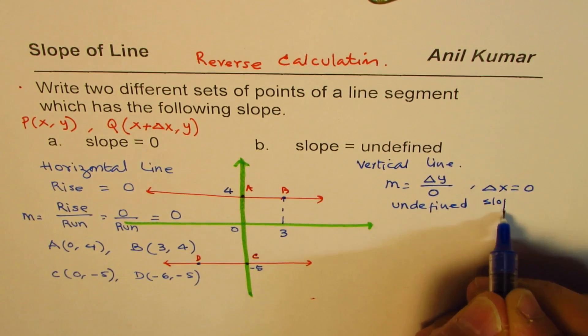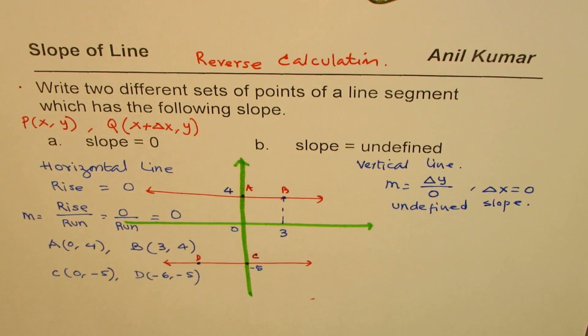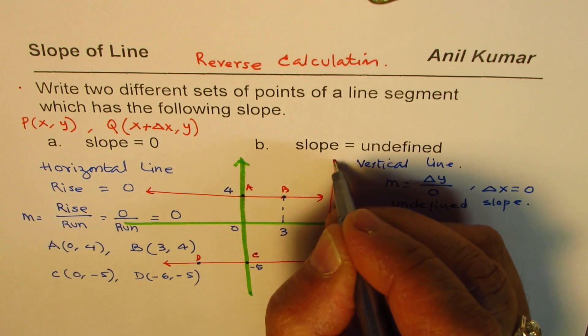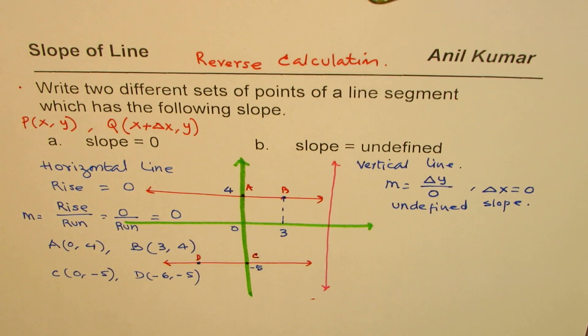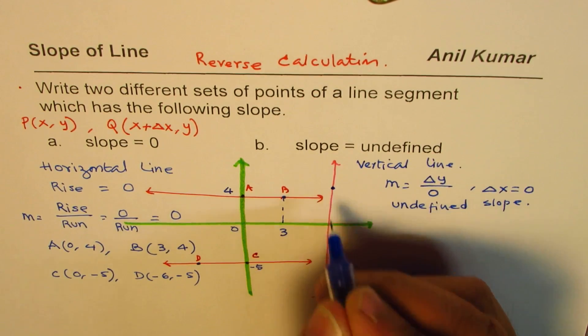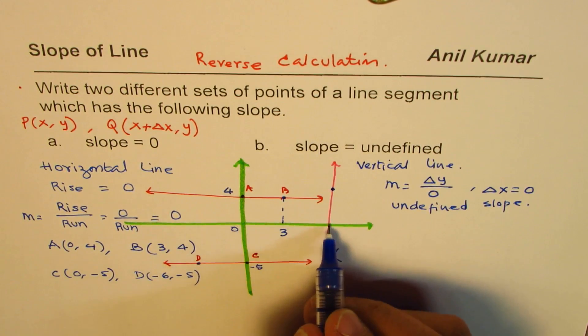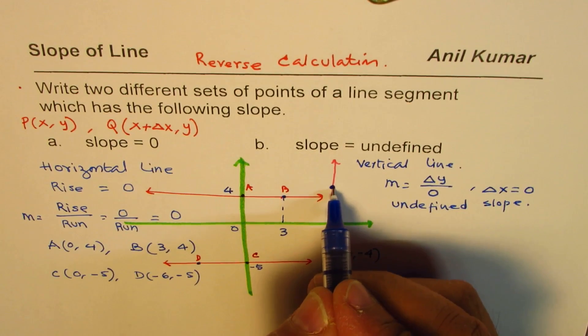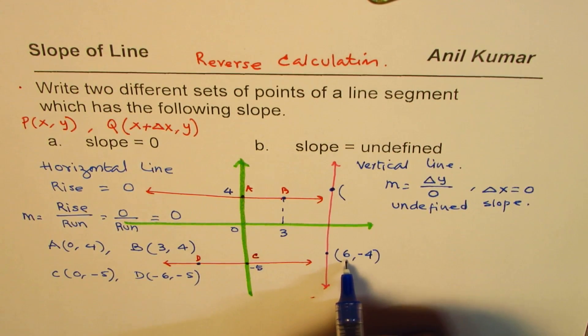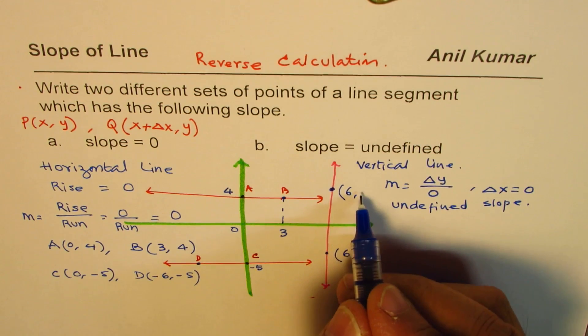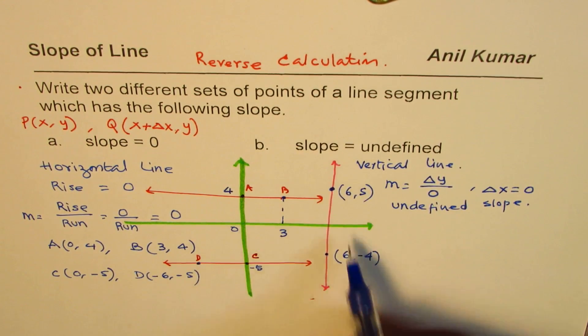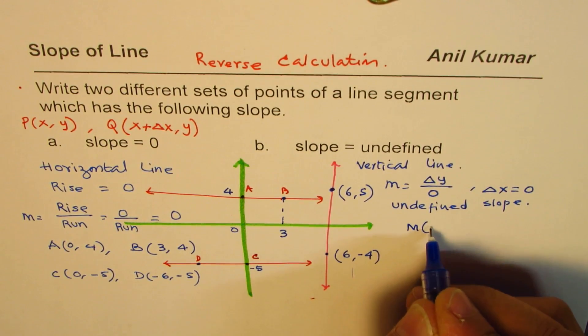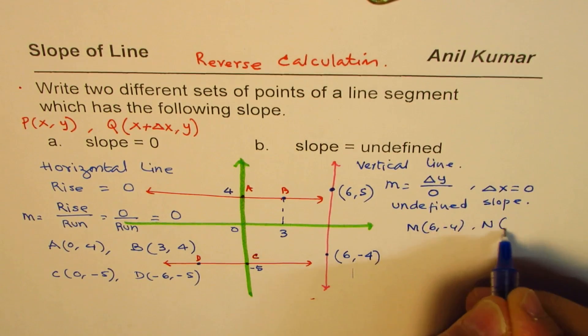That's the whole idea. You could sketch a line with undefined slope, but it has to be vertical. Any line which is kind of like this will have undefined slope. Now, two points on this line could be: if I take this point with x value six and y value, let's say, minus four, what could be the value of this point? Well, the x value has to remain same but y can change, so y could be, let's say, five. That set of points is one set. We can say the points are M (6, -4) and N (6, 5).